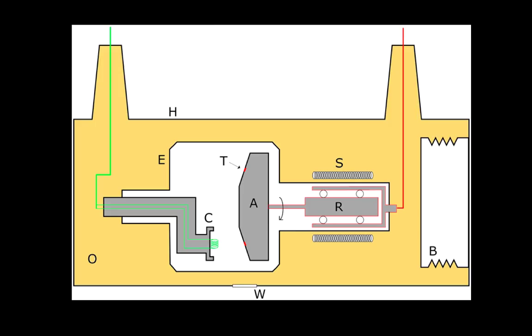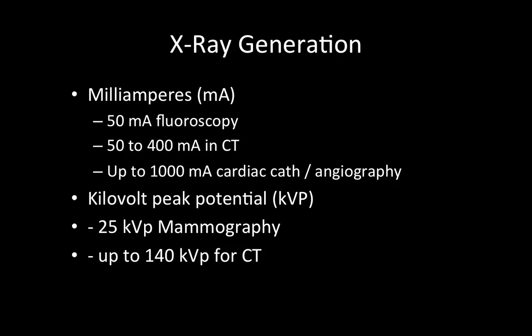On the other hand, when we're talking about mAs, there's a linear proportion. If we double the mAs, that leads to a doubling of the number of X-rays, and we're actually doubling the radiation dose. So it's a linear relationship when we're talking about mAs — different from when we do an increase in the KVP settings.